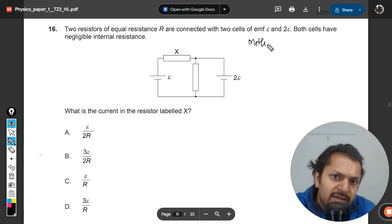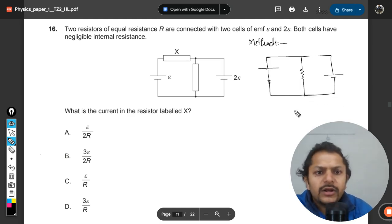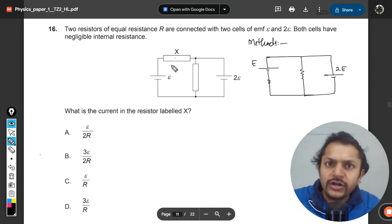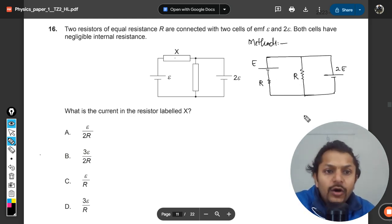Let us first go for method number one. What is happening here is we can rearrange the circuit as this. Now clearly this is 2e, this is e. These are in series so it doesn't matter, we can change the order of these two equipments. I've taken the resistance on the other side so it becomes more relatable and understandable.